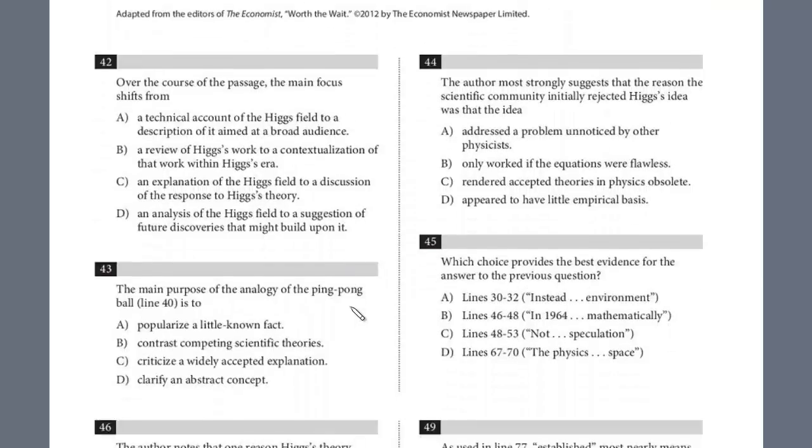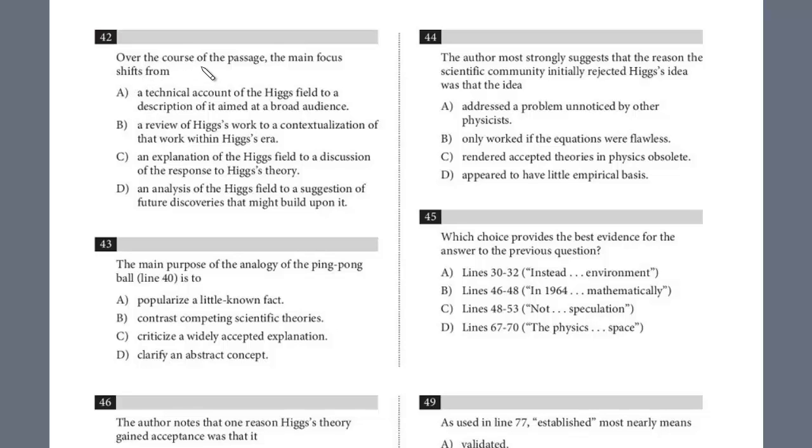So let's take a look at the first question. There's also a graph relating to this passage. Question 42, over the course of the passage, the main focus shifts from - this is a general question. We could return, we're just going to do this in order, but in the beginning it described what the Higgs field was, and his theory, but then the rest of the passage talked about how it was accepted by the community, how it wasn't accepted, but then finally it was. And so the answer here is, looks like C, right? Explanation of the Higgs field to the discussion of the response to the Higgs theory by the scientific community. So definitely C for that one.